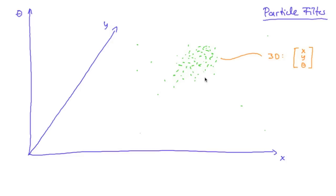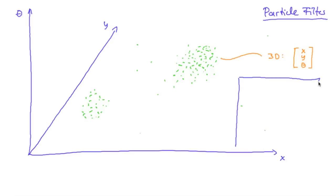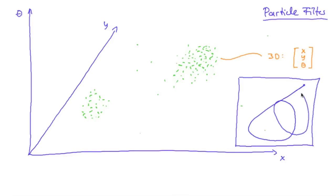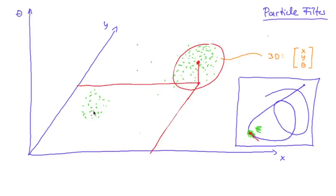Using a particle filter, we were able to represent multimodal distributions. For example, a high density of particles here indicates the robot state is here. However, if we have a second group of particles, that would indicate a second possible state of the robot. In our robot experiments, the particles were typically here, but some took a stronger left turn and were somehow here — they fortunately died out shortly after. This illustrates having one group of particles with a certain x-y position and heading, and another group with a different x-y position and heading.